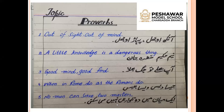The fifth proverb is: 'Ek mayan mein doh talwaren nahi sama sakti' — English: 'No man can serve two masters.' One person can never properly obey two rulers or masters at the same time. He will end up liking one and disliking the other, or following one and ignoring the other. That was our lesson for today.